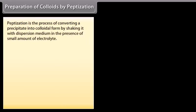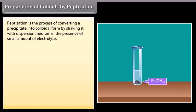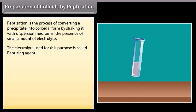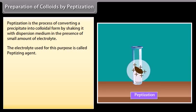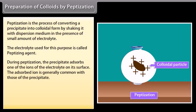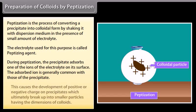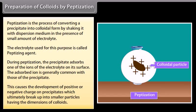Preparation of colloids by peptization: Peptization is the process of converting a precipitate into colloidal form by shaking it with dispersion medium in the presence of a small amount of electrolyte called the peptizing agent. During peptization, the precipitate adsorbs one of the ions of the electrolyte on its surface (the adsorbed ion is generally common with those of the precipitate), causing the development of a positive or negative charge on the precipitate, which ultimately breaks up into smaller colloidal-dimension particles.